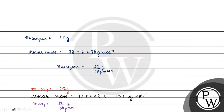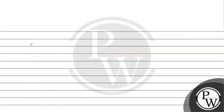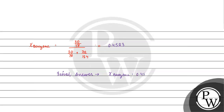Now we write the mole fraction of benzene. It equals (30/78) divided by (30/78 + 70/154). Solving this, the mole fraction of benzene comes out to be 0.4583. So the final answer is: mole fraction of benzene = 0.4583.